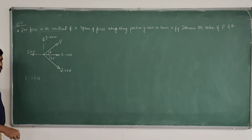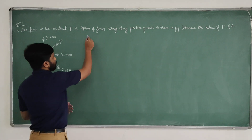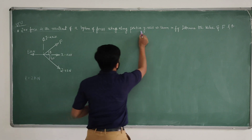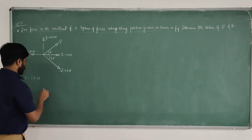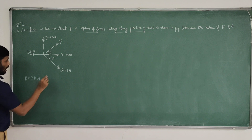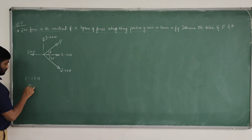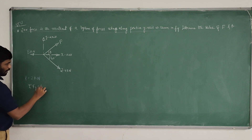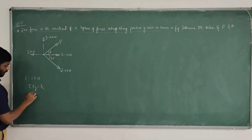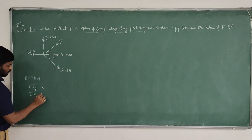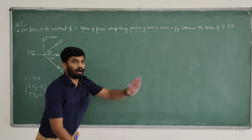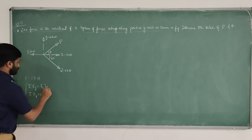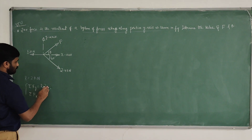R equals 2 kilonewton. The system of forces is acting along the vertical positive y axis, which means sigma Fy equals R, and sigma Fx equals 0. This is the condition because all forces are acting along the y axis.